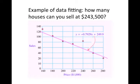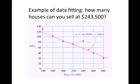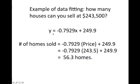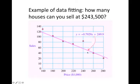Now the question is, how can we use this line equation to help us determine how many houses we can sell at $243,500? The only thing we need to do is just rewrite this equation in terms of the actual variables we use. So y is the number of homes sold is equal to negative 0.7929 times x, but x is the price of the house. So we'll just put in price here plus 249.9. And then to figure out how many we will get at 243,500, we would just plug in 243.5 for the price. And then what we get is 56.3 homes. So in other words, what that tells us is that even though we didn't do the experiment, in other words, we didn't know exactly how many houses will be able to sell at 243.5, we can predict what it would be using the equation of the line.